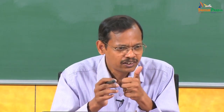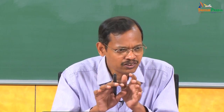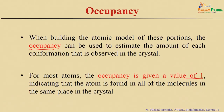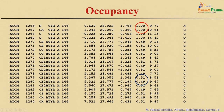If the occupancy is 1, it means that atom is found at the same position in all the molecules in the crystal — there is no deviation. When the occupancy is 1, all molecules have that atom in the same position.